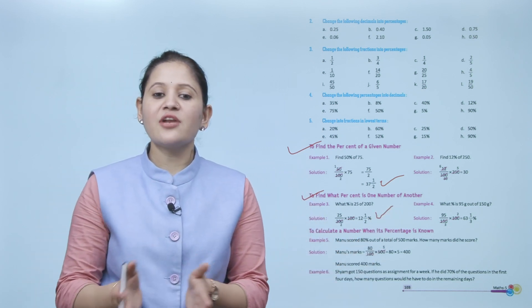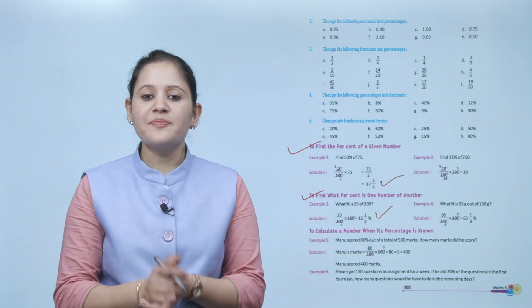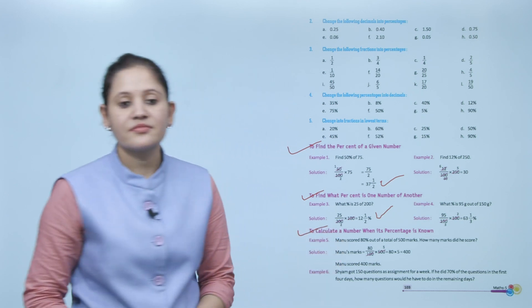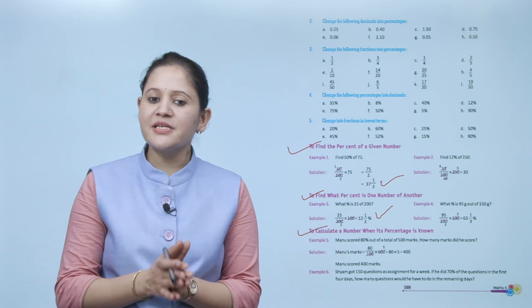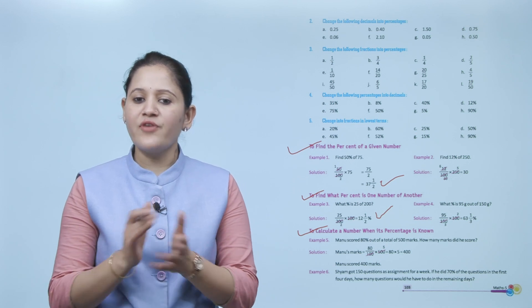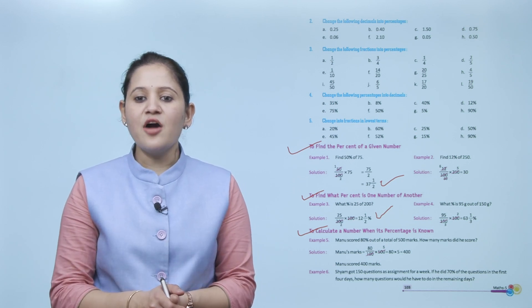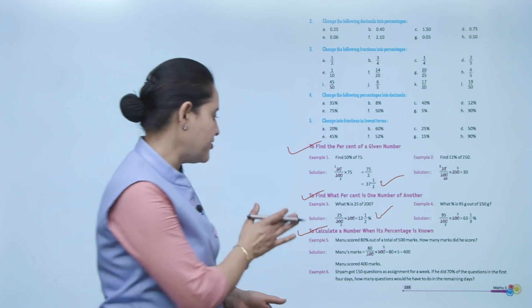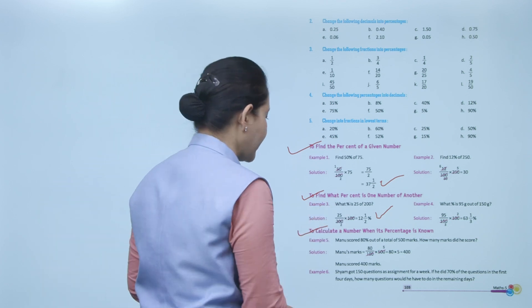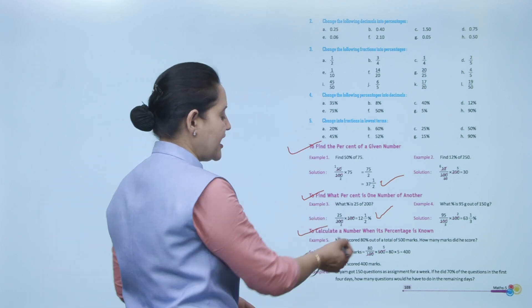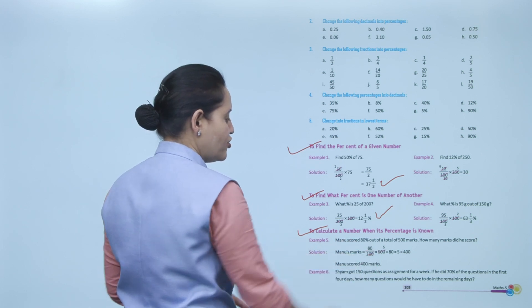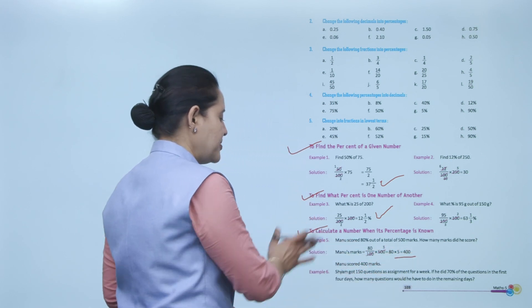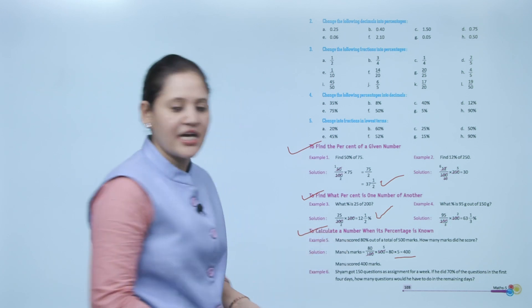Next is calculating the number when a percentage is known. Manu scored 80% out of a total of 500 marks — how many marks did he score? Manu's marks = 80/100 × 500 = 400 marks. So Manu scored 400 marks.